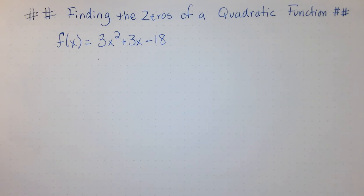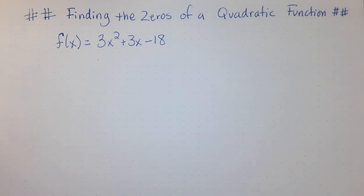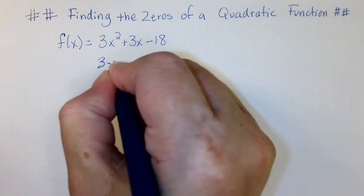When the problem asks to find the zeros of a function, you need to set the function equal to zero. It is wanting you to find the x value when the y value is zero. In order to do that, we are going to set this function equal to zero.